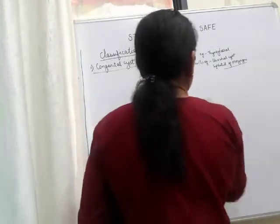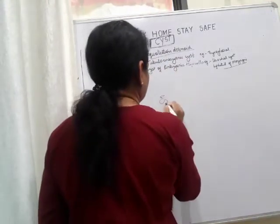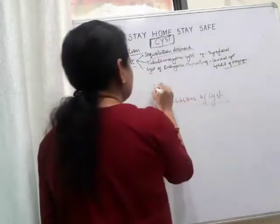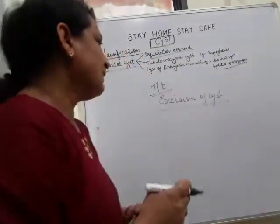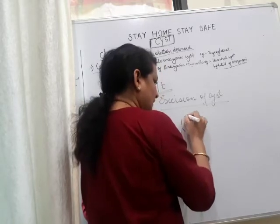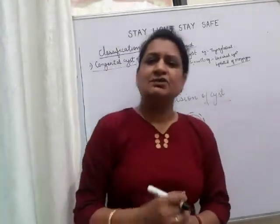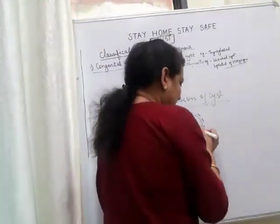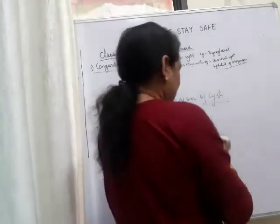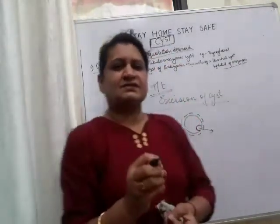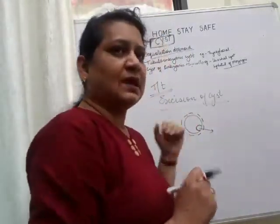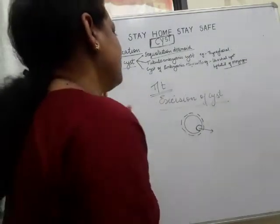Treatment of the cyst is excision. The treatment is excision of the cyst — you have to remove the whole cyst. The cyst should always be removed intact. If any portion of the cyst wall remains, those cells will continue to multiply and a new cyst will form. This is why recurrence is very common in cysts if the cyst wall is not completely removed. You must remove the entire cyst.